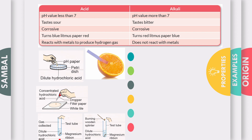The lighted splinter will produce a pop sound. Hence, the gas produced is hydrogen gas. Same as alkali, you can test them with pH paper or litmus paper. It's just that the litmus paper will change from red to blue.